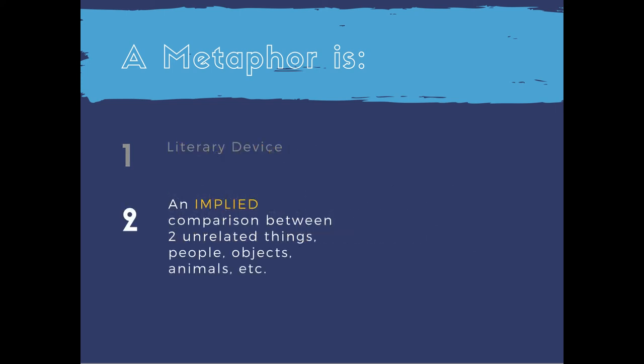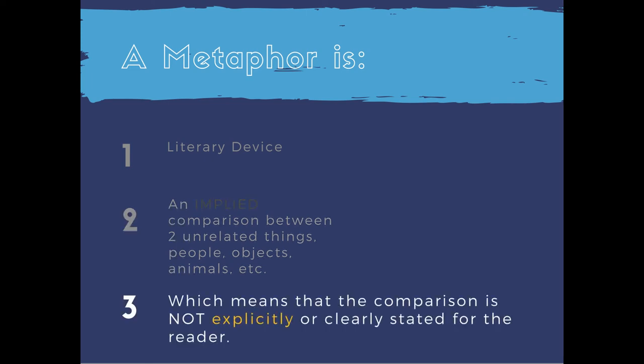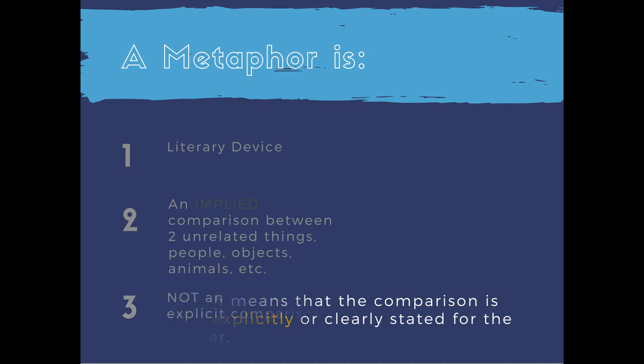A metaphor is an implied comparison between two unrelated things — people, objects, animals, you name it. The important piece to remember here is that it is an implied comparison, which means that the comparison is not explicitly or clearly stated for the reader.